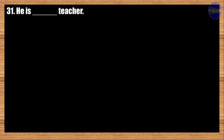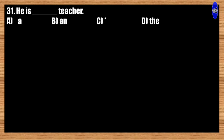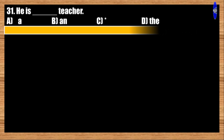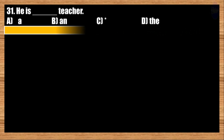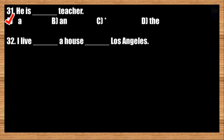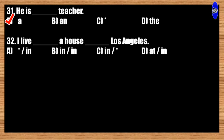Number thirty-one: He is blank teacher. A: a; B: an; C: blank; D: the. The best answer is option A. He is a teacher.